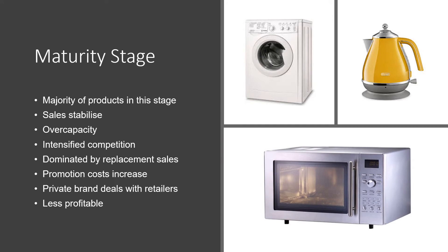The maturity stage is where the vast majority of consumer products are. Sales stabilize - if you sold half a million last year, you sell half a million this year. But there's overcapacity, with a lot of producers chasing fewer customers. Competition intensifies, and it's about replacement sales - when a washing machine or kettle breaks, you replace it. Competition is tough so you try to make your product more distinctive. Private labels appear, like supermarket-branded microwaves, making it less profitable.